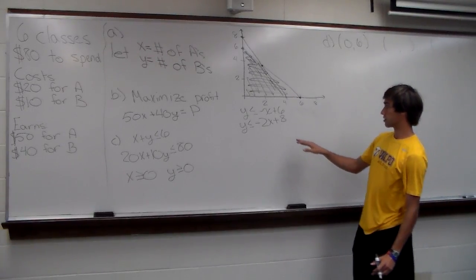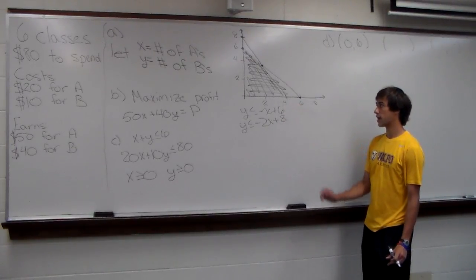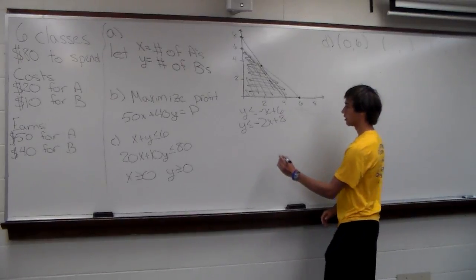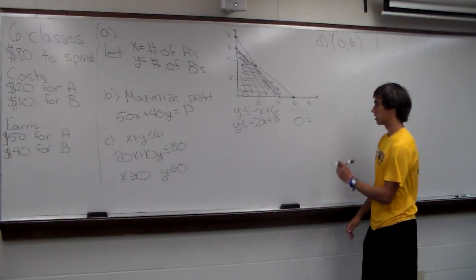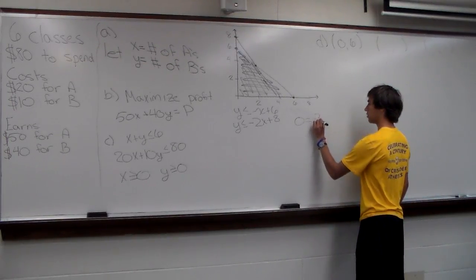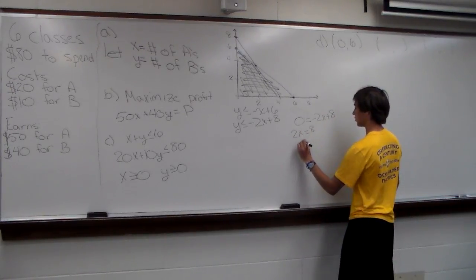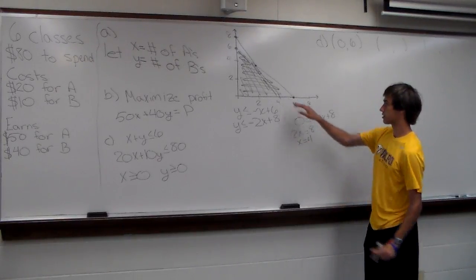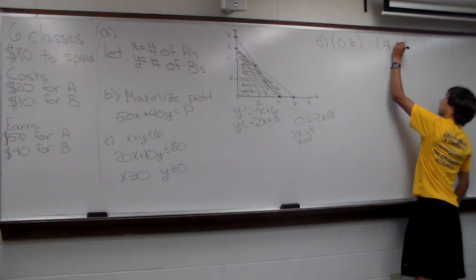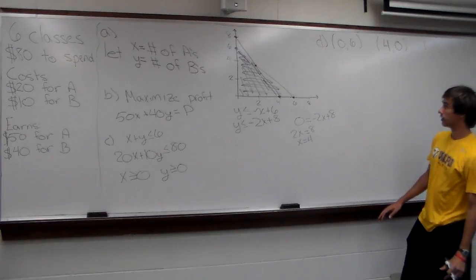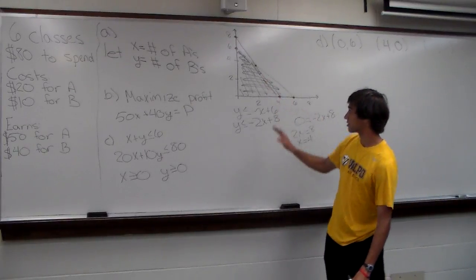The second corner point is where Y ≤ -2X + 8 intersects the X-axis. Setting Y = 0 gives 0 = -2X + 8, so 2X = 8 and X = 4. That gives us the corner point (4, 0). Finally, we need to find where the two lines intersect, which appears to be around (2, 4).